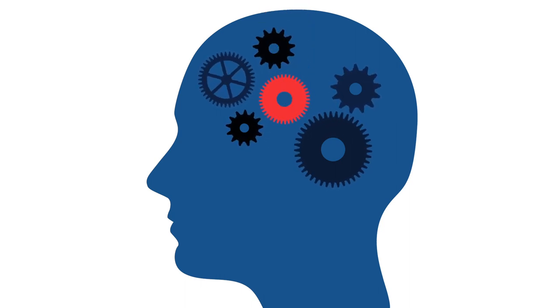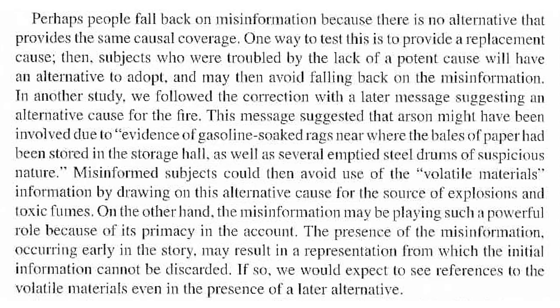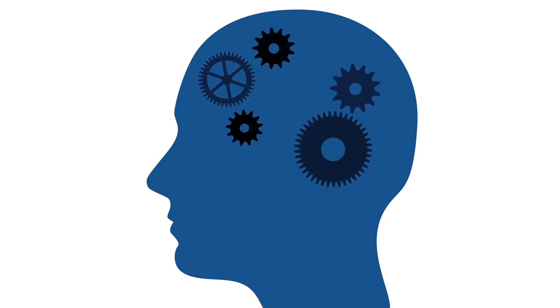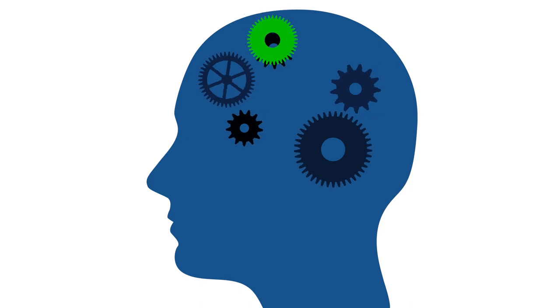We prefer a complete inaccurate model over an incomplete more accurate model. Seifert found the most effective way to reduce the continued influence effect was to produce an alternative explanation for the fire. She found if the retraction included evidence for arson in the form of gasoline-soaked rags near bales of paper, then participants stopped believing the original misinformation. It's not enough to tell people the myth is wrong — you also need to provide an explanation that neatly replaces the myth in their mental model.